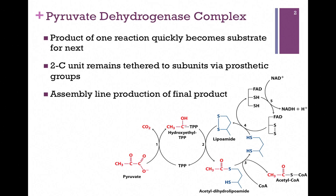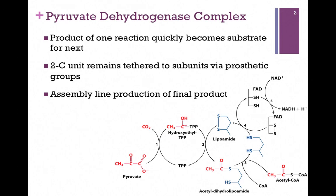We only have one substrate — that's pyruvate on the far left — and one product, acetyl-CoA. So it's referred to as the transition step, although it's actually a multi-step process. In this process, we'll see three enzymes involved, so it's a complex of enzymes. The product in one step rapidly becomes the substrate for the next, and even though it looks quite complex, it happens very quickly. Once pyruvate binds to that first enzyme, it is never released from the complex. It remains tethered to the various prosthetic groups, or cofactors, and passed from one enzyme to the next — kind of an assembly line production of the final product. You will be responsible for recognizing the three enzymes, their cofactors, and their roles in this process.